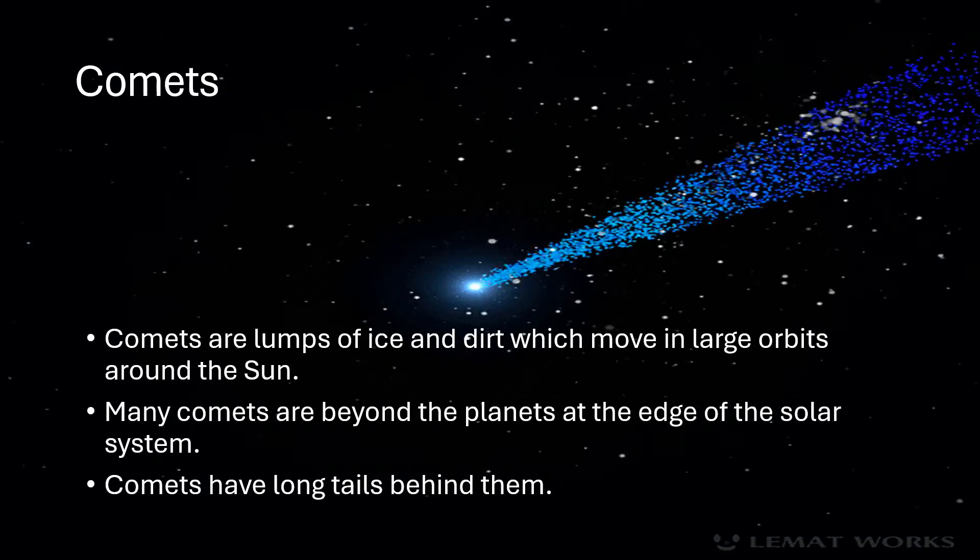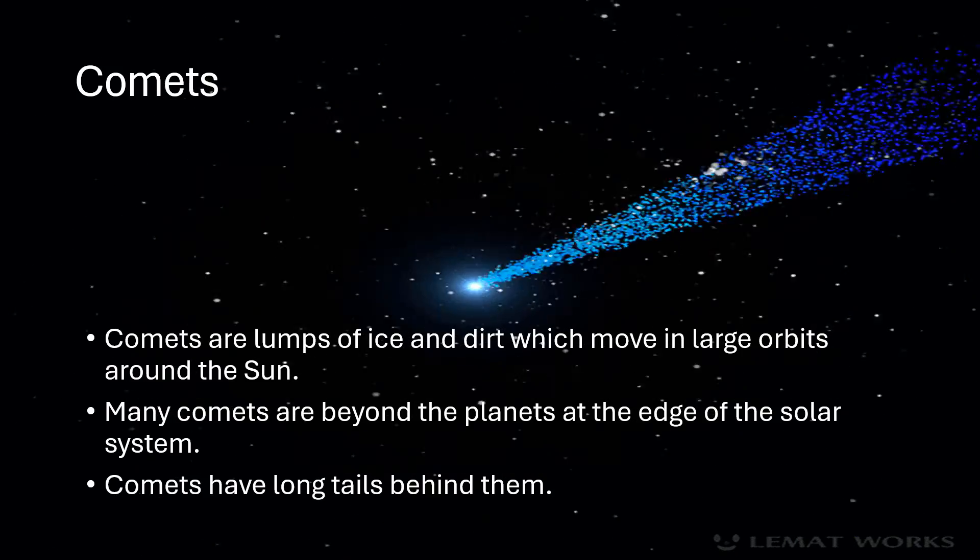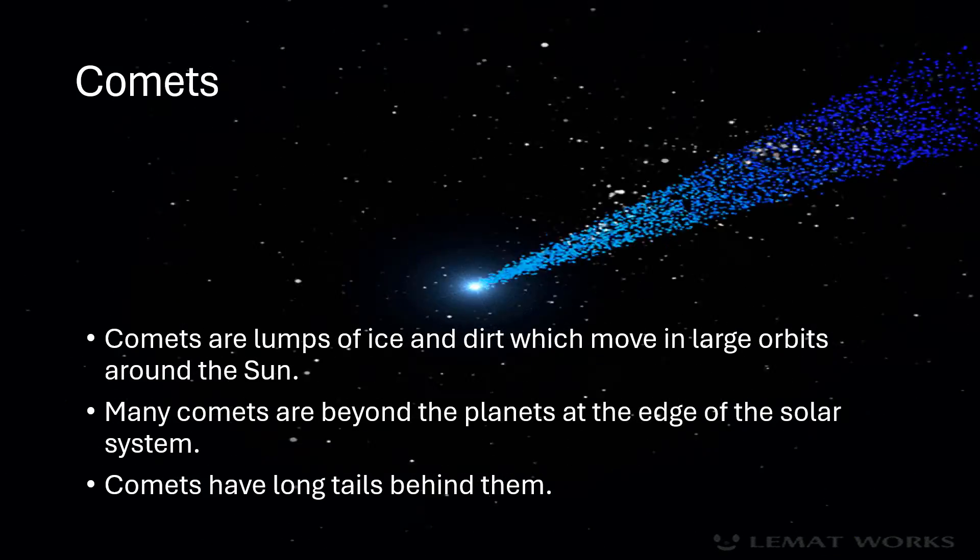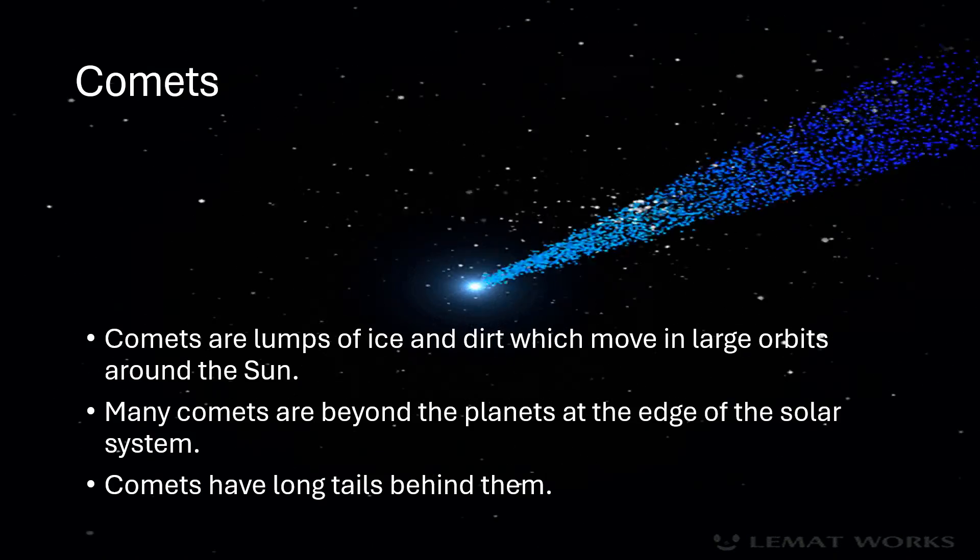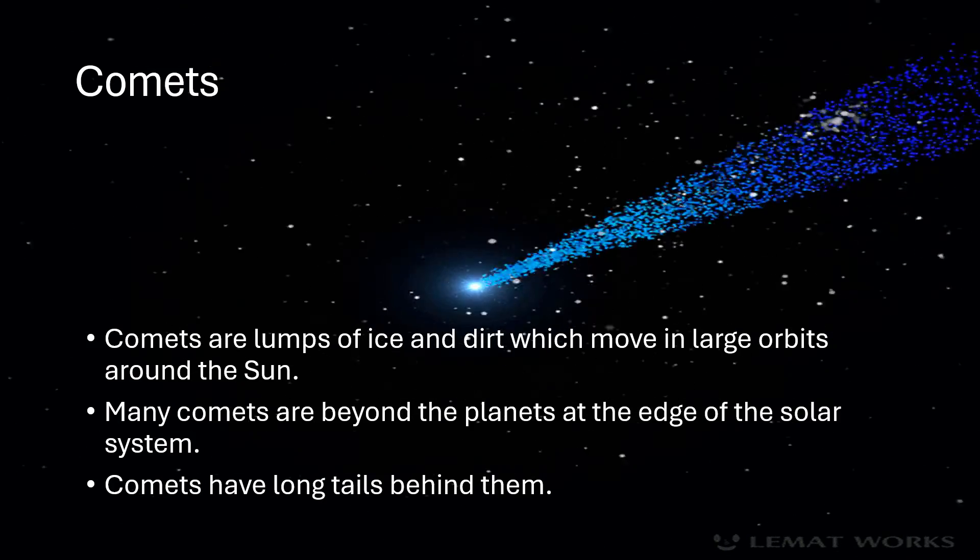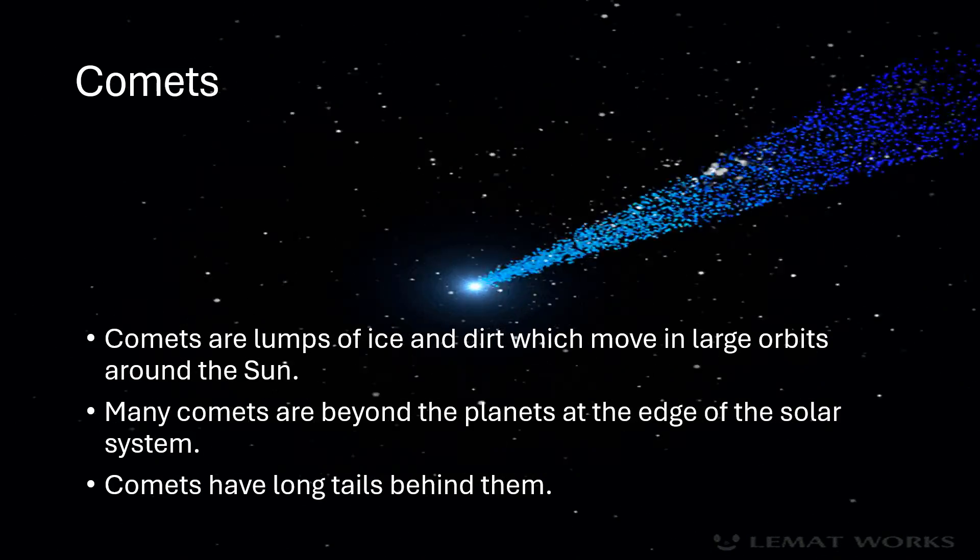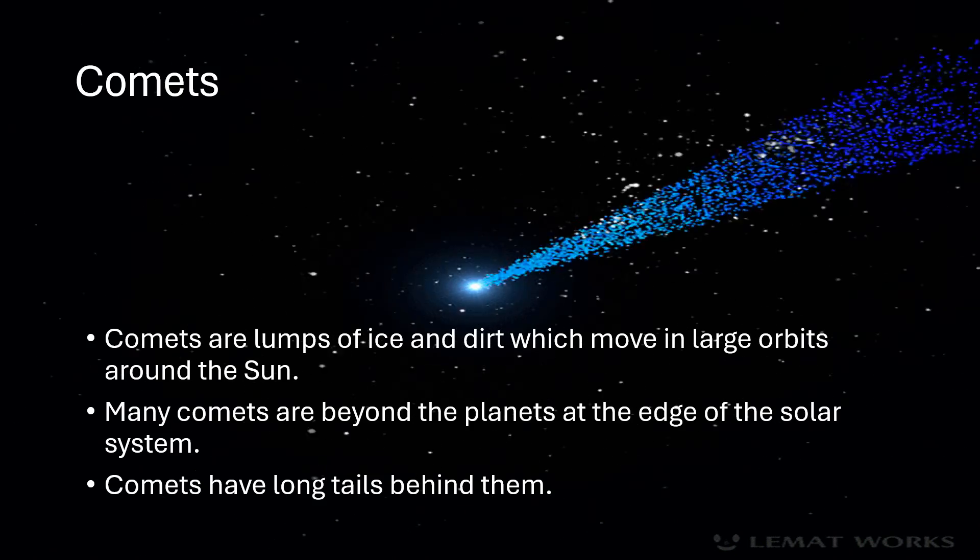Comets: Comets are lumps of ice and dirt which move in large orbits around the sun. Many comets are beyond the planets at the edge of the solar system. Comets have long tails behind them.